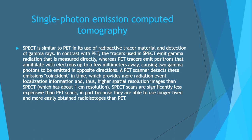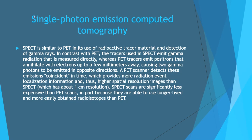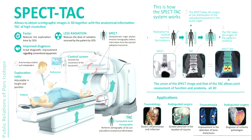Single photon emission computer tomography, or SPECT, is similar to PET in its use of radioactive tracing material and detection of gamma rays. In contrast with PET, the tracers used in SPECT emit gamma radiation that is measured directly. SPECT scans are significantly less expensive than PET scans, in part because they use longer-lived and more easily obtained radioisotopes.